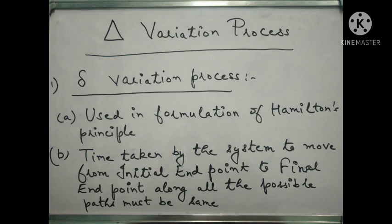Del variation is used in the formulation of Hamilton's Principle — that's the first important point. Second important point: the time taken by the system to move from the initial point to the final point along all possible paths must be the same. Consider P and Q as two endpoints — P is initial, Q is final. There are infinitely many possible paths from P to Q.